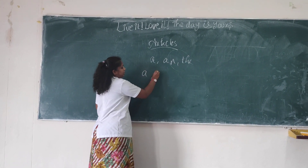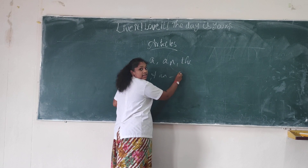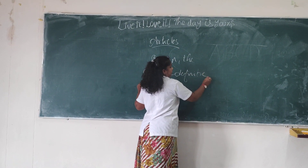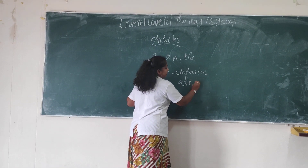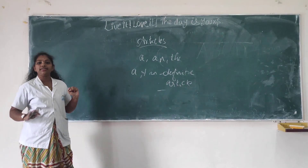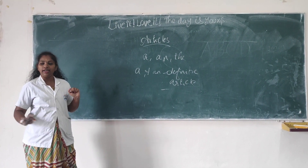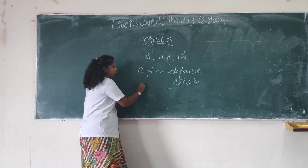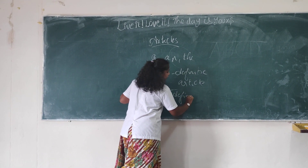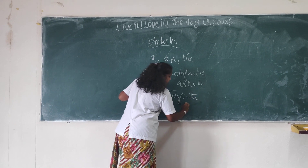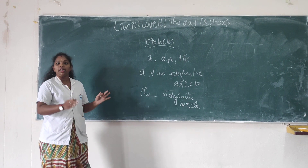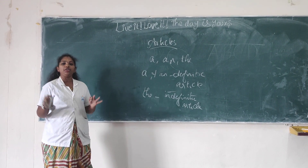So this 'a' and 'an' we call as definite Articles, which means it does not refer to any particular thing, any person, any idea or any action. But 'the' we call as indefinite Articles, which means it refers to a particular person, particular object, or particular idea.